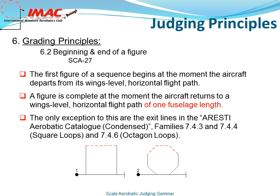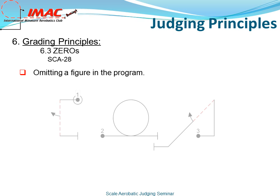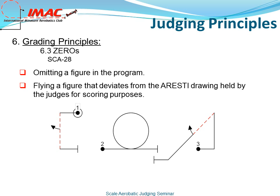This would be square loops and octagon loops. Rule 6.3, zeros. In the illustration below, let's say the pilot flies his downline on figure number one and omits the loop in the center and flies directly to the shark's tooth, figure number three. The loop would result in a zero. Flying a figure that deviates from the Aresti drawing held by the judges for scoring purposes — for example, if he did not fly the loop as figure two and flew a teardrop or a humpty bump, then that maneuver would be zeroed because it was not flown as drawn on the Aresti.